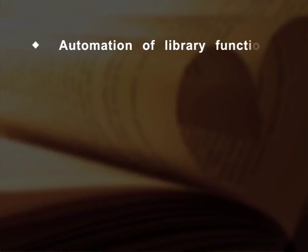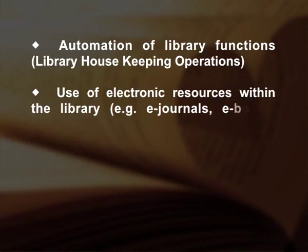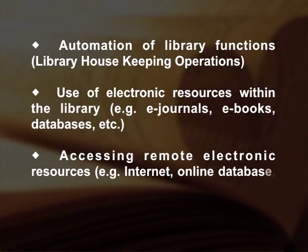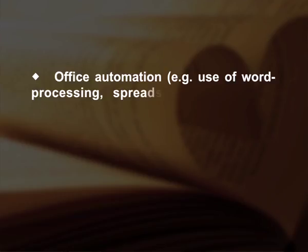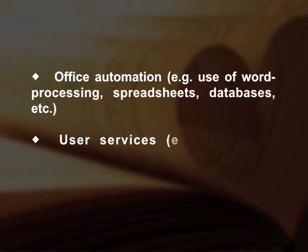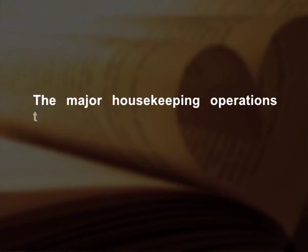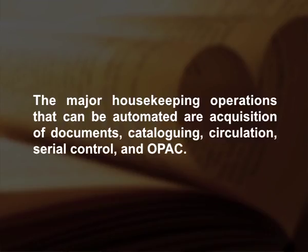The major areas include: automation of library functions and library housekeeping operations; use of electronic resources within the library such as e-journals, e-books, databases; accessing remote electronic resources such as the internet and online databases; office automation using word processing, spreadsheets, databases; and user services such as CAS, SDI, abstracting, and indexing. Housekeeping operations include those functions done in the background so that the library can fulfill its goals. The major housekeeping operations that can be automated are acquisition of documents, cataloguing, circulation, serial control, and OPAC.